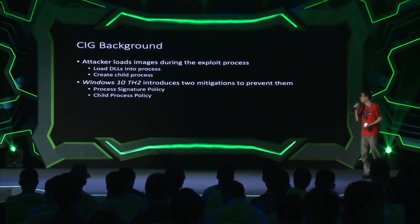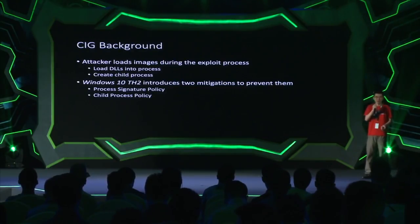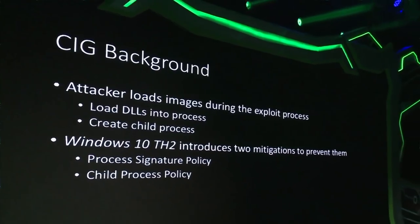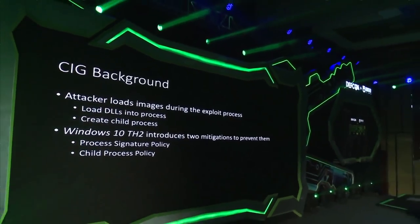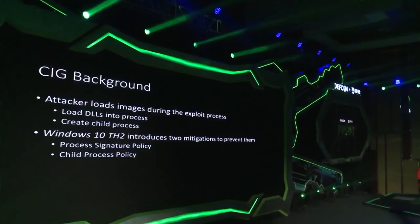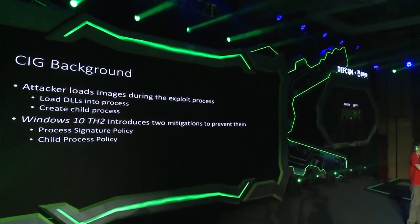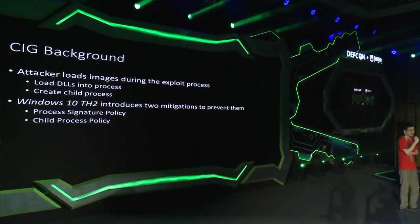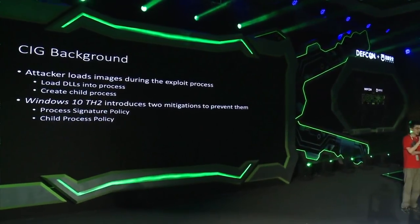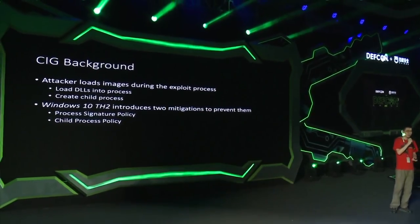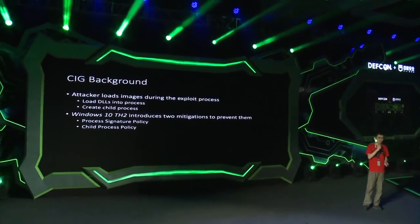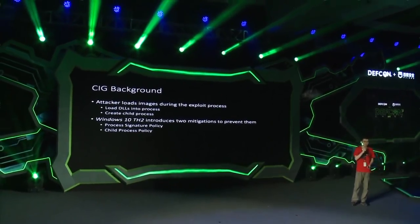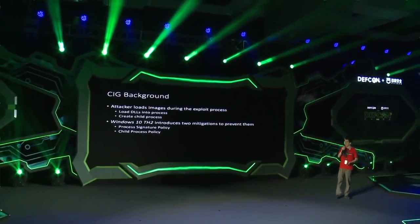Windows 10 Threshold 2 introduced two mitigation policies to prevent these from happening. The first one is child process policy. When the child process policy is enabled for a certain process, it prevents the process from creating a subprocess as the child process of this process.